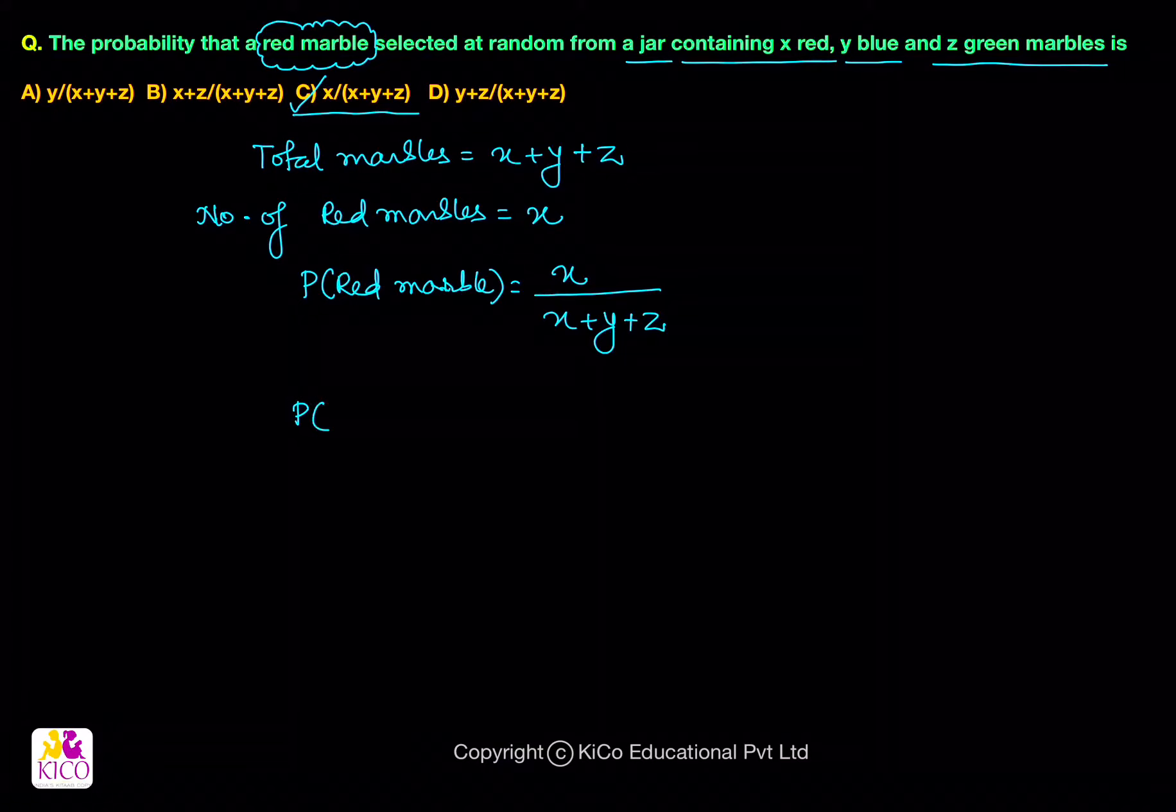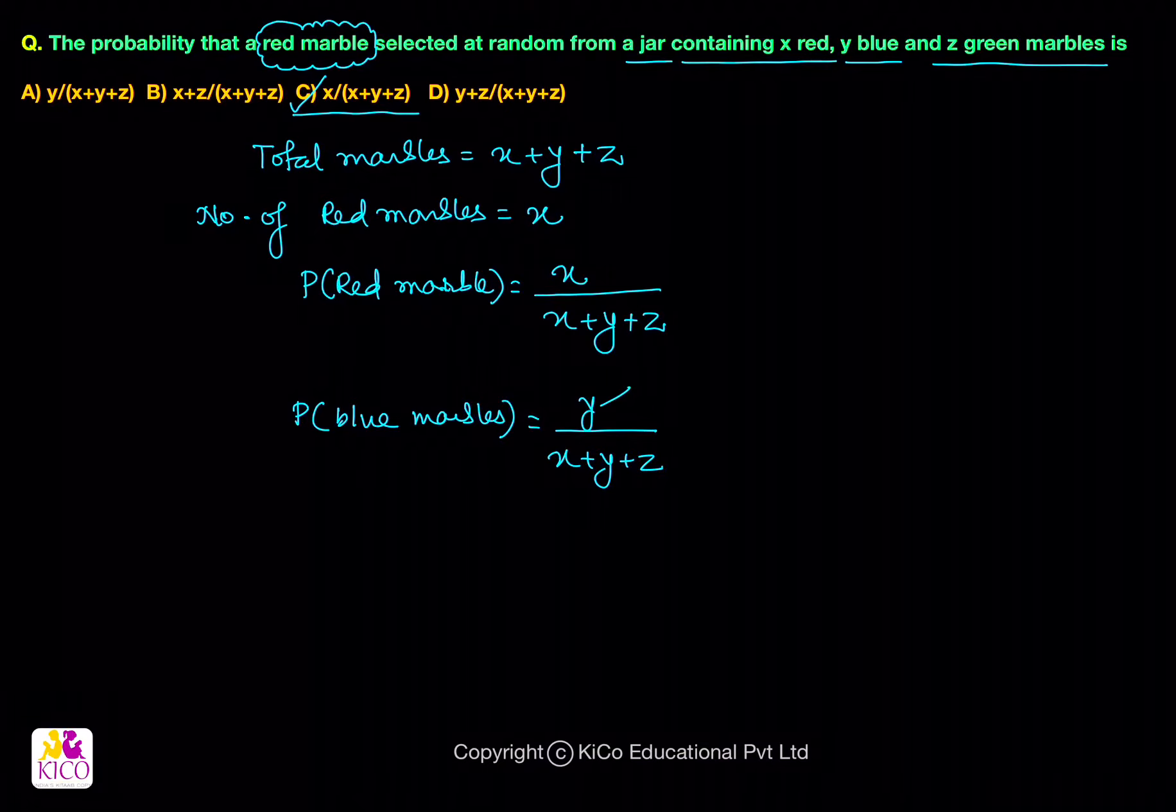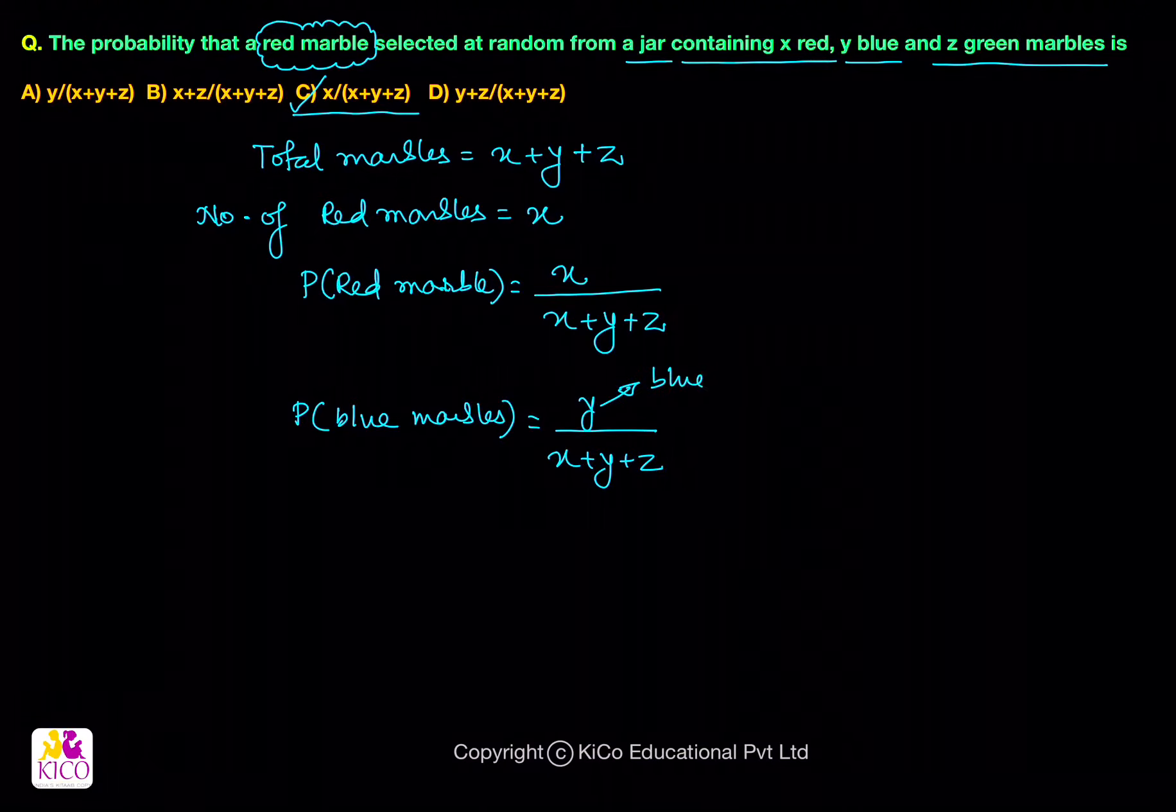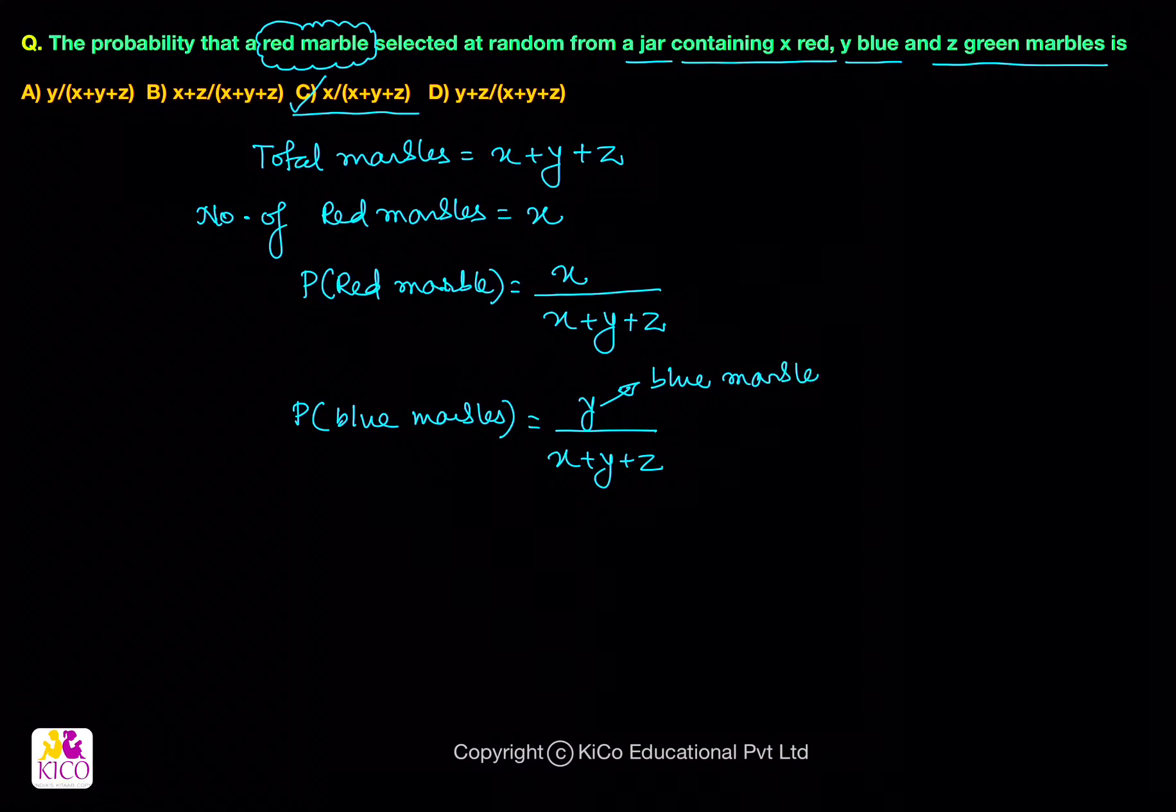Now, you can also find out the probability of, say, blue marbles. So, the probability of blue marbles can be y upon x plus y plus z. Why? Because y is equal to the total number of blue marbles.